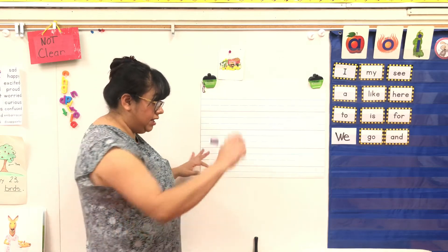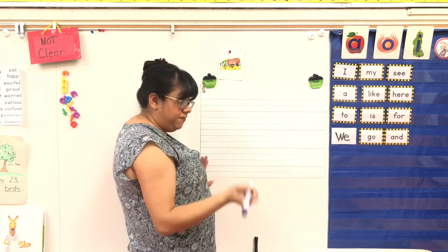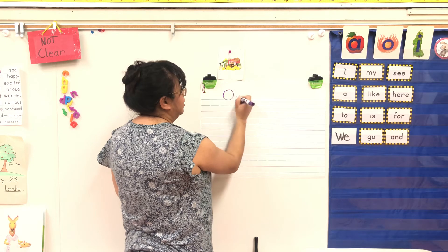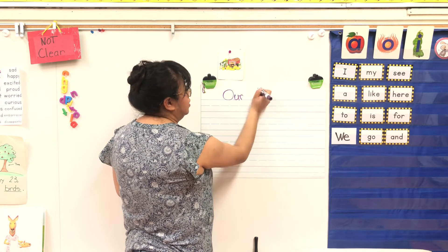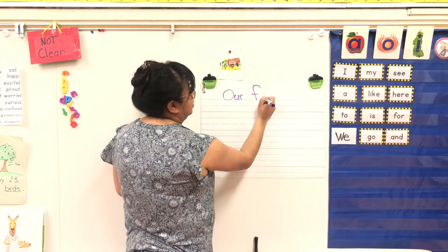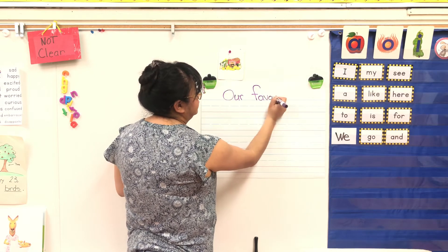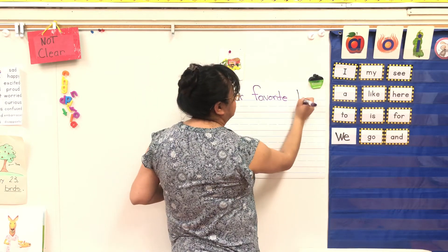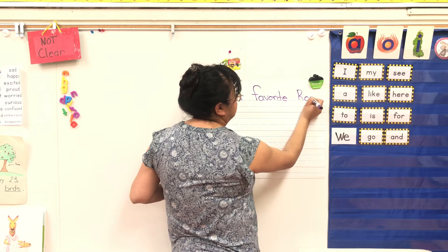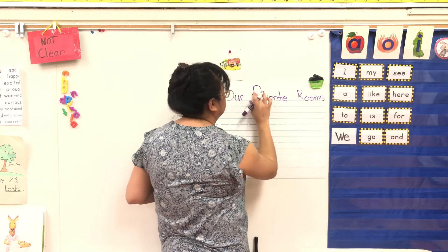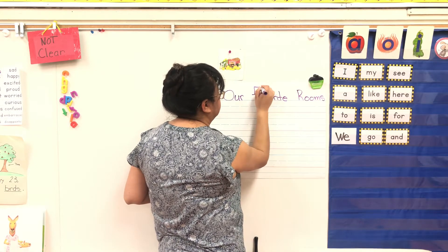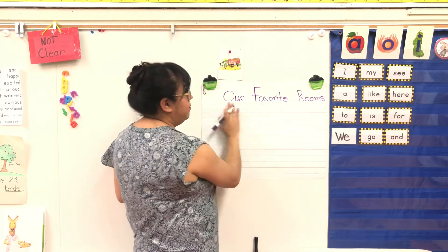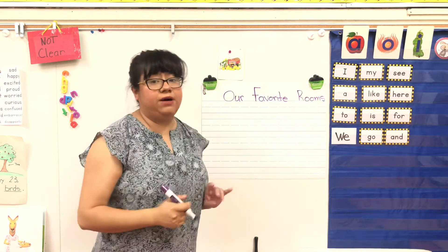So let's go ahead and I'm going to write our favorite room. That's a capital. So 'Our Favorite Rooms' is the title of our writing.